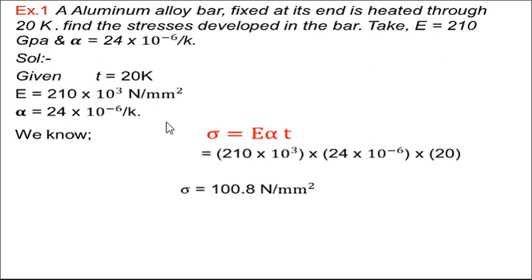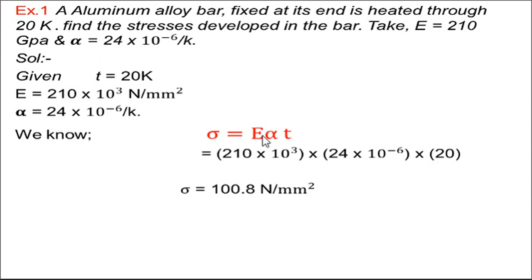As the temperature increases, expansion takes place in the bar. However, since this aluminum alloy bar is fixed at its ends, there is no free movement or free expansion at its ends. That is why temperature stresses are developed. If the bar were free to expand in both directions, there would be no development of temperature stresses. Since the ends are fixed, temperature stresses are definitely developed.